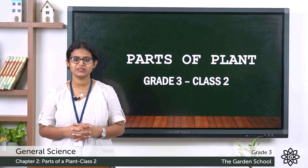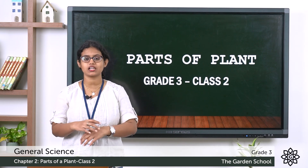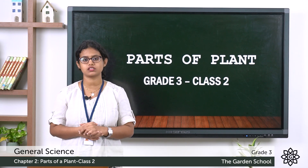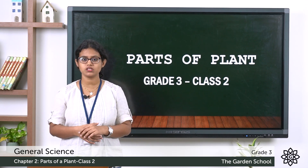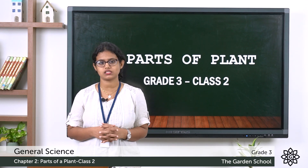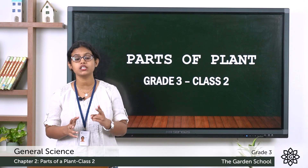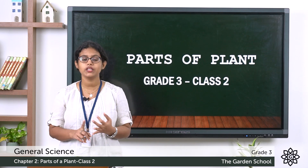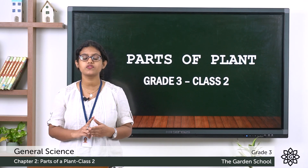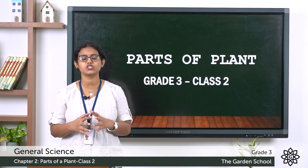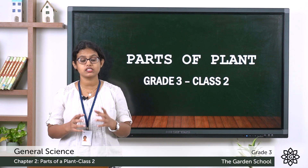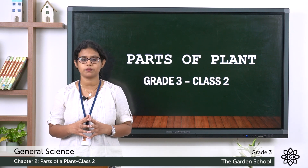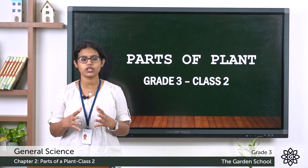A very good morning to all. In the last class we started with the second chapter, that is parts of a plant. We learned about the different kinds of plants and then we learned about parts of a plant — root, stem, leaves, flower, fruit, and seed. We started with the first two parts: the root and the stem, and we discussed their functions.